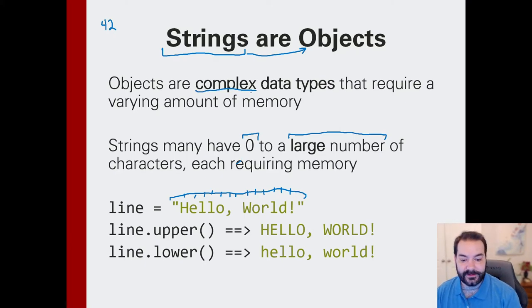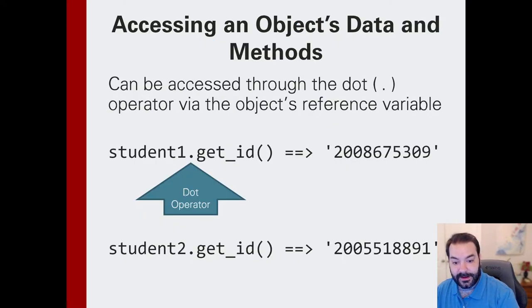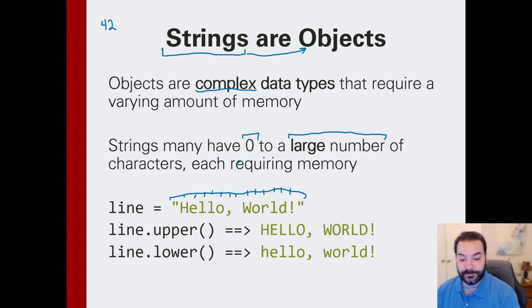But specifically, now we start to remember, if I have strings, and strings are objects, then I have a dot operator that I can use with my objects. And strings are going to have functions, methods associated to them that allow me to do things to the string.